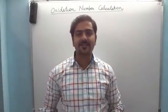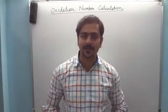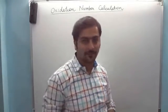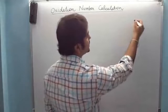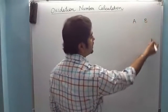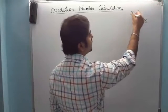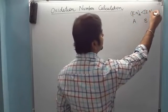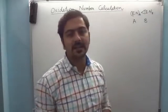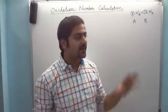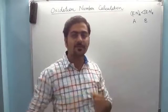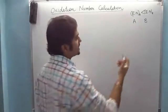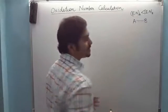Hi friends, our today's topic is Oxidation Number Calculation. Let's suppose we have two elements A and B, and the electronegativity of A is less than the electronegativity of B. Electronegativity basically means the ability of an element in a bonded state to attract electrons towards itself — the more you attract electrons, the higher your electronegativity.